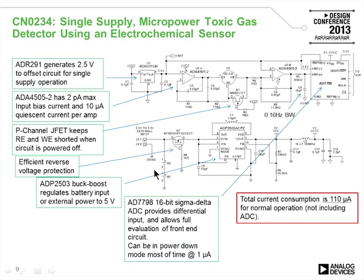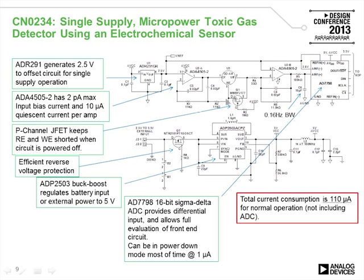This is the basic schematic of the reference design for the gas sensor. In the center we see the sensor itself. The transimpedance amplifier — the ADA4505 dual — converts the current into voltage. A FET is included to prevent damage to the sensor on startup. This is the input buffer, and this is the feedback path which forces the counter electrode to the correct voltage so that the voltage across the working electrode and reference electrode is zero.